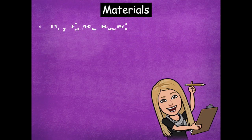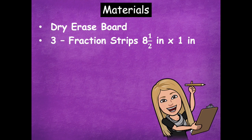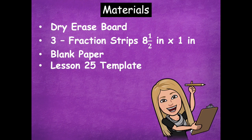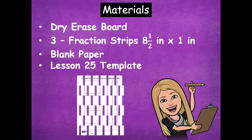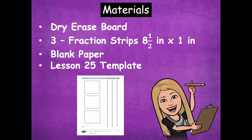The materials that you'll need for this lesson are your dry erase board. You'll need three fraction strips — they'll be eight and one half inch by one inch strips — a blank piece of paper, and your lesson 25 template. I know this is lesson 27, but we're going to be using our lesson 25 template, just the first page. If you don't have your fraction strips, don't worry. I'm going to show you how to make those in the video. So make sure you at least have paper, scissors, glue, and a ruler to be able to make those.